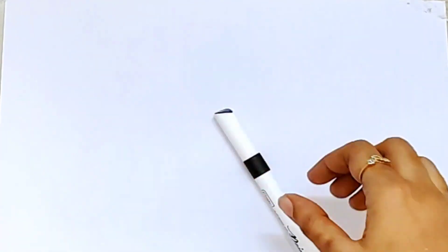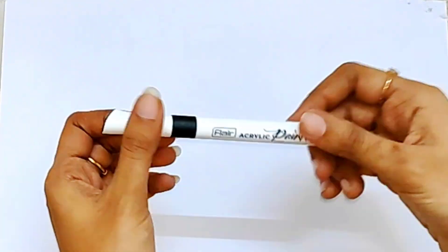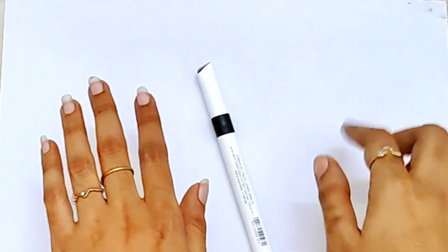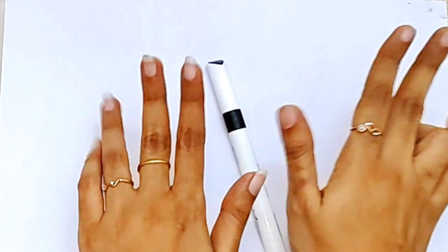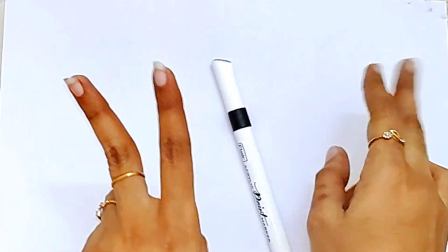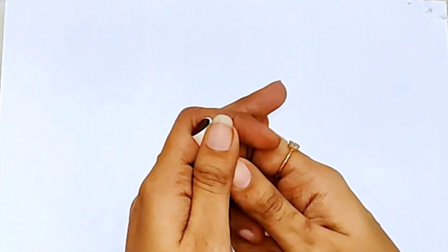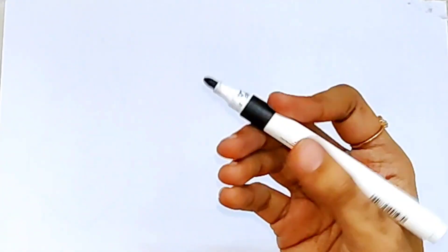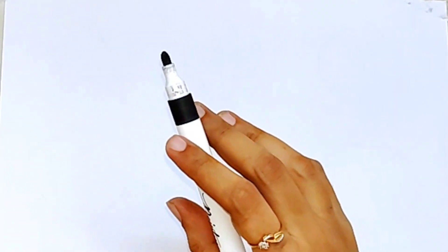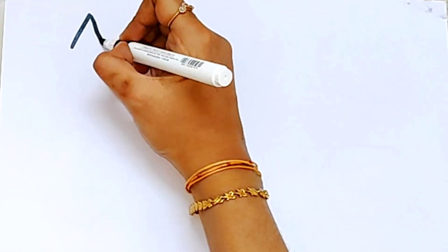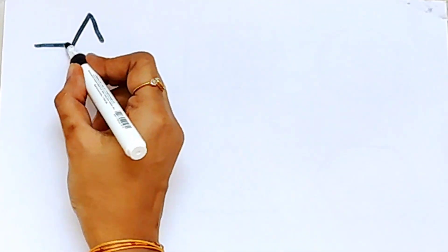Hello children. This is a black color. In this video, let's learn the 2D shapes. Let's draw the shapes.